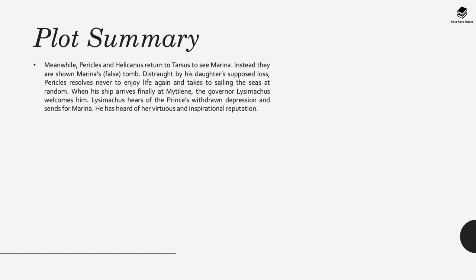Meanwhile, Pericles and Helicanus have returned to Tarsus to see Marina. Instead, they are shown Marina's false tomb. Distraught by his daughter's supposed loss, Pericles resolves never to enjoy life again and takes to sailing the seas at random. When his ship arrives finally at Mytilene, the governor Lysimachus welcomes him. Hearing of the prince's withdrawn depression, Lysimachus sends for Marina, having heard of her virtuous and inspirational reputation.